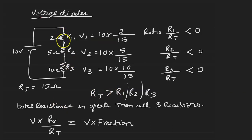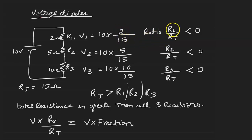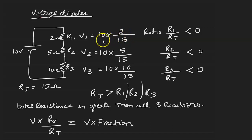We also know how to calculate the voltage across R1, R2, R3. The general concept is the voltage divides in ratios. The voltage across R1 is 10 times 2 divided by 15, where 2 is the resistance R1 and 15 is the total resistance. Likewise, the voltage drop across R2 is 10 times 5 by 15, and for R3 it is 10 times 10 by 15. The ratio R1 divided by RT is always less than 1, so that is why the voltage across V1 drops — 10 times some decimal less than 1 is always less than 10. That's why it is called a voltage divider.